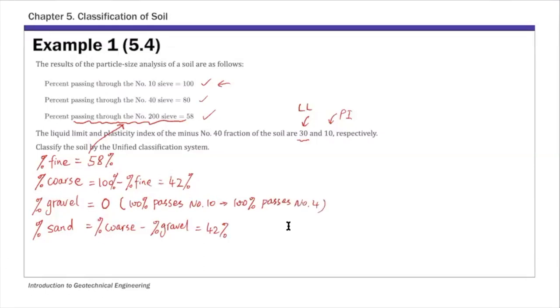That means zero percent retained on number four. So zero percent gravel. And then we have LL and PI. So that's given.